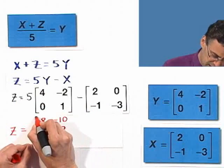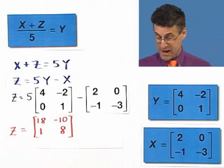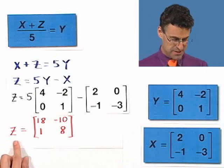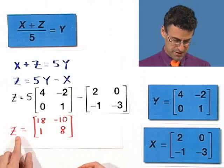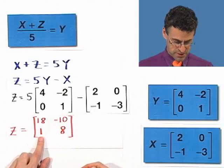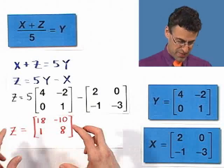And so we see that the solution to this equation of matrices is actually a matrix itself, namely z, which equals the matrix 18, and then in this place negative 10, in this place 1, and in this place 8. And you put that together, and that is the solution.